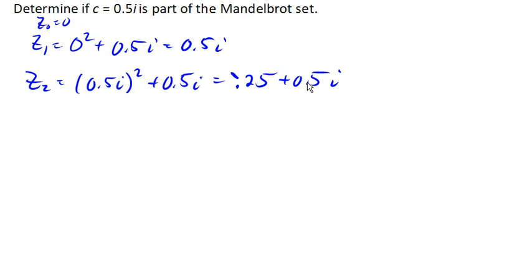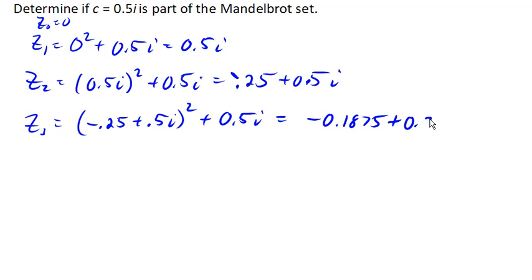z_3 would be z_2 squared plus c. At this point, I could really use a calculator. It turns out that this is negative 0.1875 plus 0.25i. And the next term turns out to be negative 0.02734 plus 0.40625i.